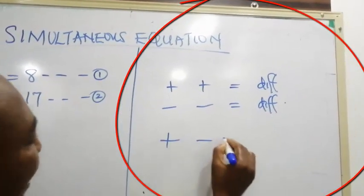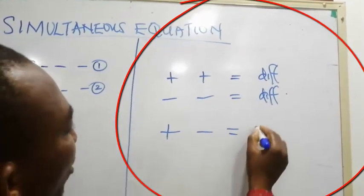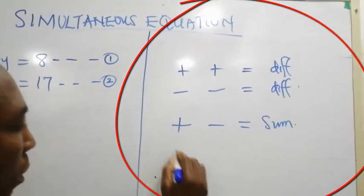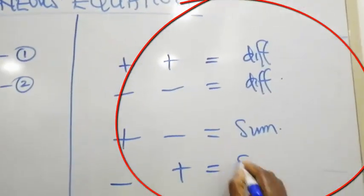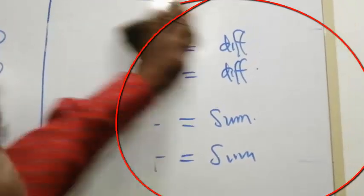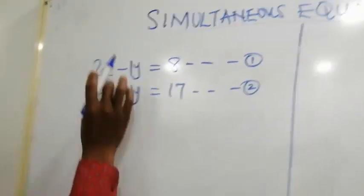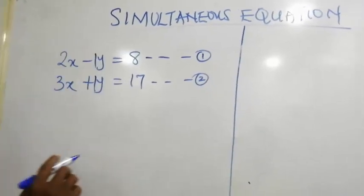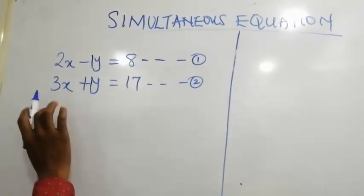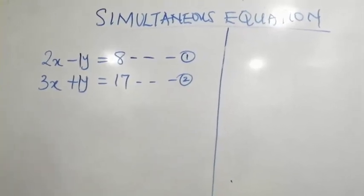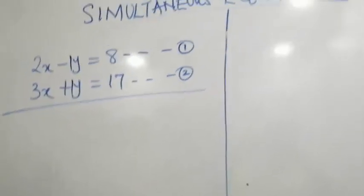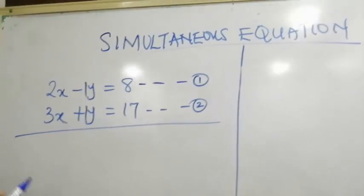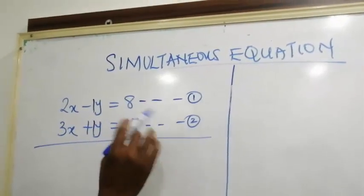But if the signs are different, you find the sum, plus minus or minus plus, you sum the two equations. As for this, the coefficient, the sign before the coefficient are different. So you are going to sum this, that is you are going to add equations one and two. I'm going to take you through this simple process.